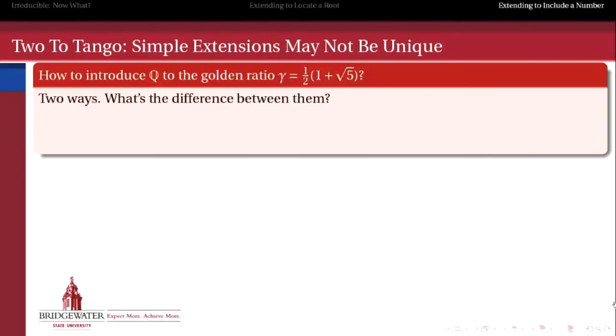So there are two ways to introduce the rationals to the golden ratio, 1 half times 1 plus radical 5. One way is to just take the number gamma, 1 half times 1 plus radical 5, and throw it in there. Use that as the element of your simple extension. This would be kind of the most obvious way to do it. Just straight ahead, throw in gamma and see what happens.